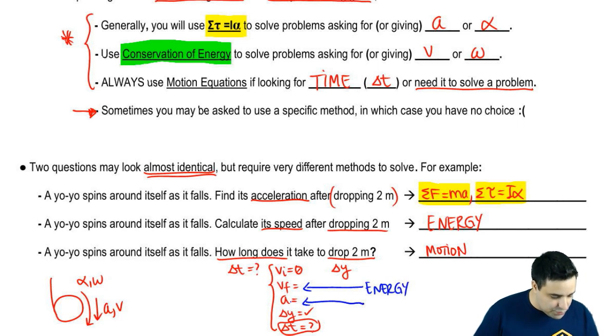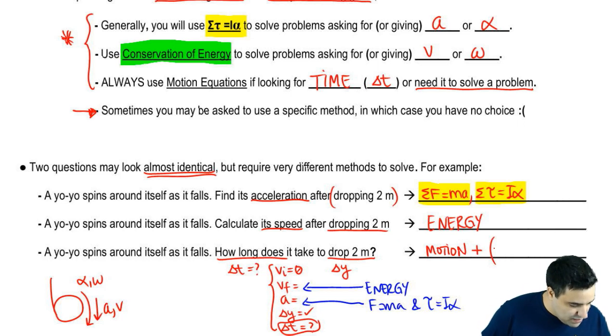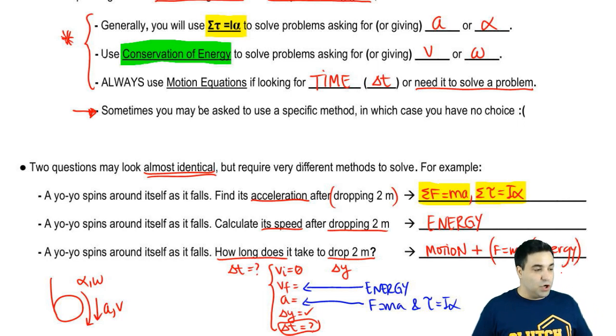So you're going to have to either find v final using energy, or you're going to use F=ma and torque equals I alpha to find acceleration so that you can use motion equations. So here, to solve this, you're going to use motion plus either F=ma or energy. Okay? Depending which way you want to go.